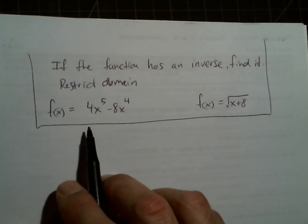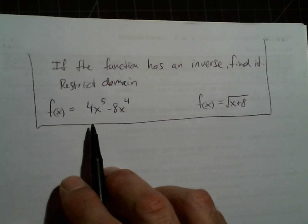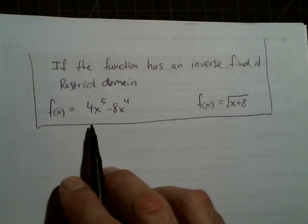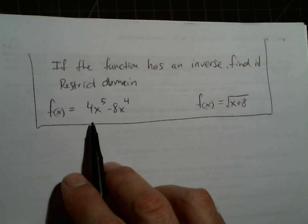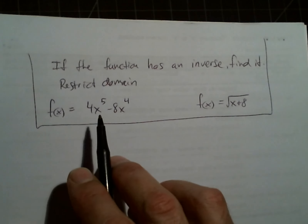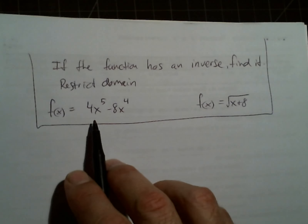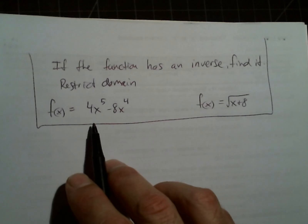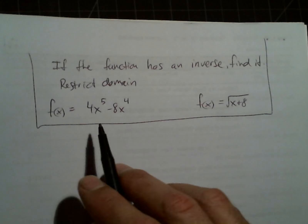Reviewing the last lesson: a function has an inverse function if it's one-to-one. So if we look at the graph and it passes the horizontal line test, then we know there's an inverse function.